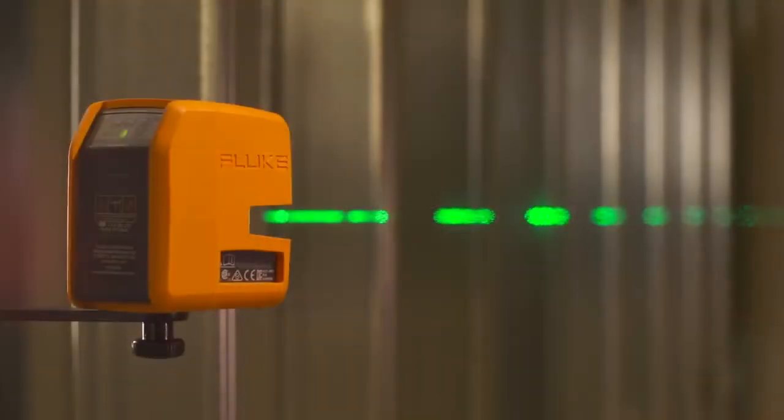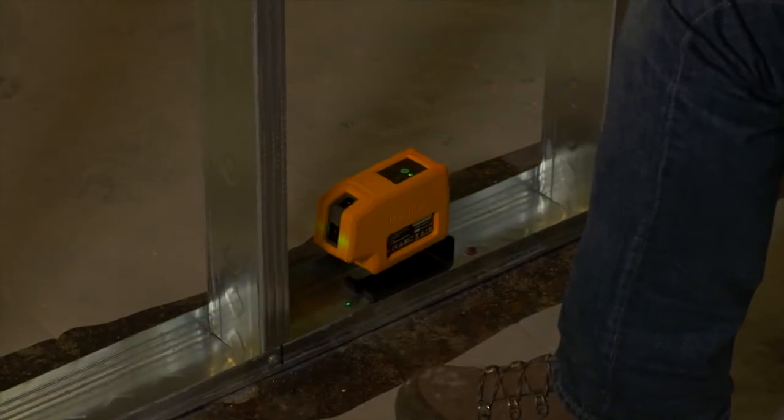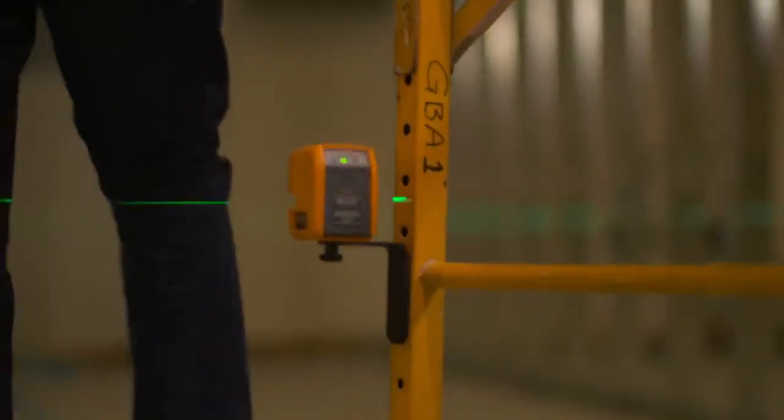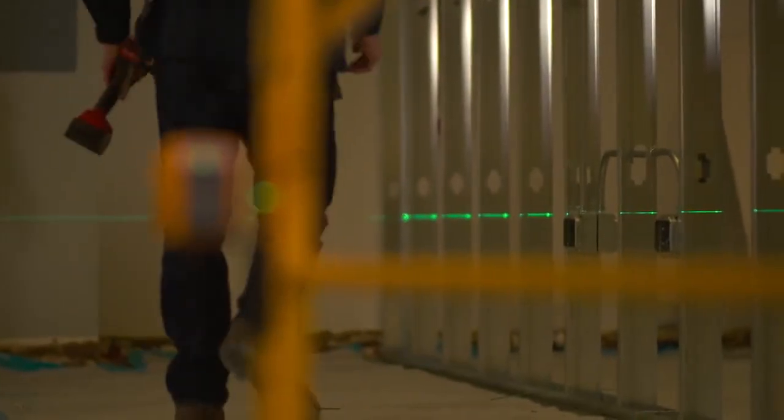Fluke laser levels are designed to make the job easier, save time over plumb bobs and old-school levels, and deliver impeccably aligned fixtures, outlets, conduit, ducts, and more.